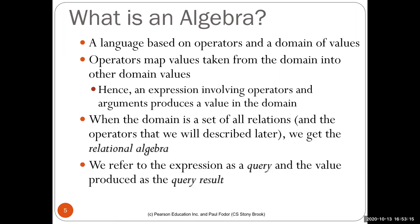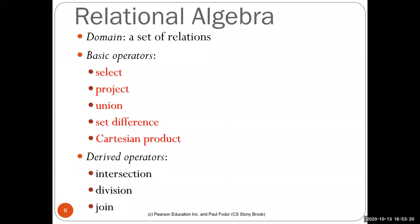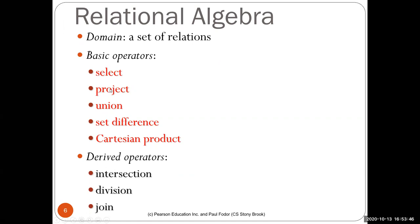When we have an expression in relational algebra we call it a query, and the result produced is the query result. The domain in relational algebra is the set of relations defined in your database. The basic operators we'll learn are: select, which filters a relation keeping only those tuples satisfying a condition; project, which selects only a subset of attributes from a relation.